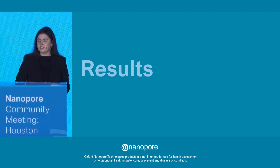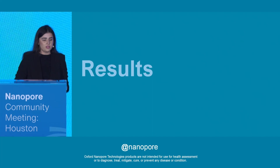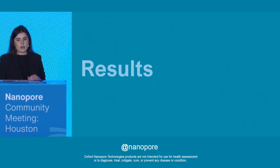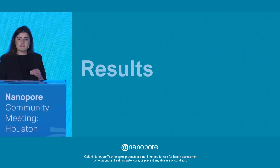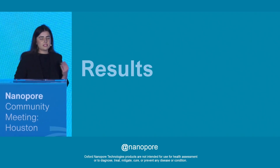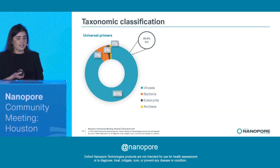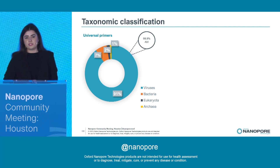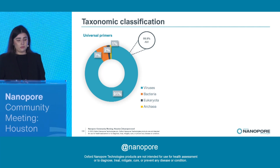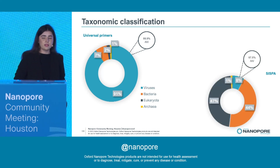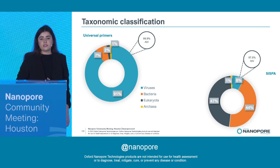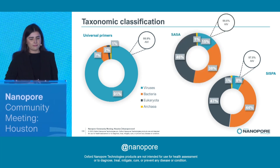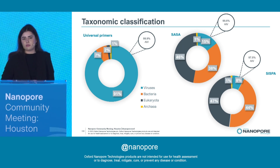Now that we're all familiar with the different enrichments, let's bring them to a real scenario. We selected five positive samples from the current outbreak — H5N1 — as well as mixed infection samples containing different poultry viruses and different influenza A subtypes. Starting from this taxonomy classification plot with the universal primers, you can clearly see that the majority of our reads were viral reads, and in those viral reads, 99.9% were influenza — so we basically only sequenced influenza reads. On the other hand, with SISPA, we decreased the viral reads to only 8%, with a high percentage of bacteria reads. And finally, with SASA, we stood in the middle, with 15% of our reads being virus, as well as a high percentage of bacteria reads.